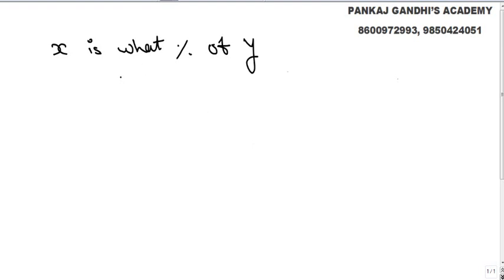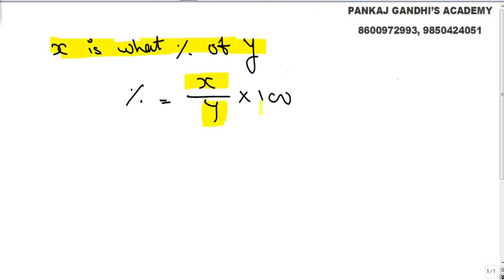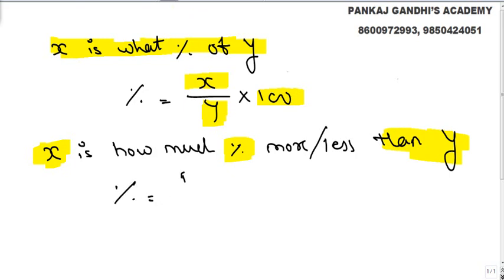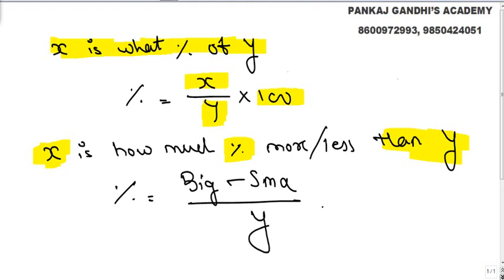If the question asked is 'x is what percent of y', the required percentage is x upon y into 100. If it is asked 'x is how much percent more or less than y', the required percentage is (bigger minus smaller) upon y into 100, where y is the denominator.